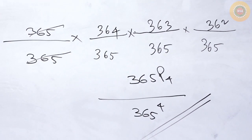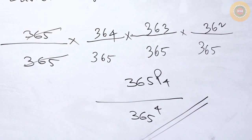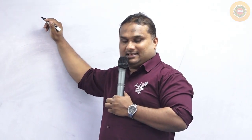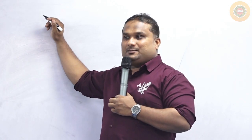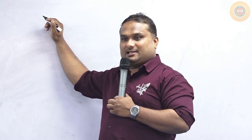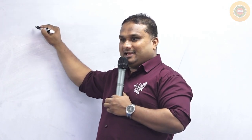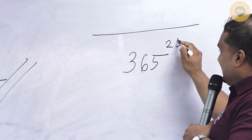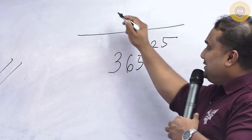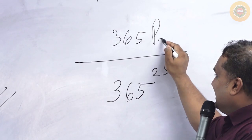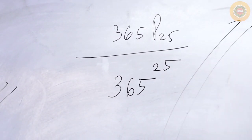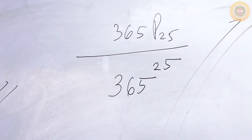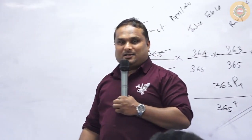Now listen — I had a question in my graduation: in a classroom of 365 students, what is the probability that their birthdays fall on 25 different days? I waited 8 years to crack this question. It is simply 365 permutation 25, divided by 365 to the power 25. This question is a matter of seconds!